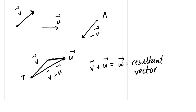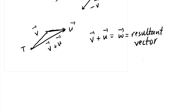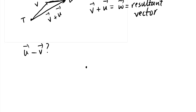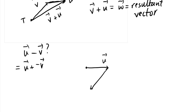Whatever the first vector starts and the second one ends — from that point to that last point — that's the resultant, called the resultant force in physics. For u minus v, we construct vector u from a point, then add negative v — opposite direction to v. Whatever vector u started and negative v ended gives us the resultant vector u minus v. That's the geometric interpretation of vectors.